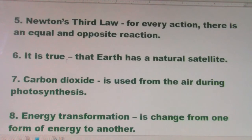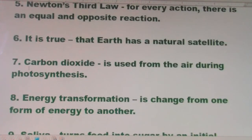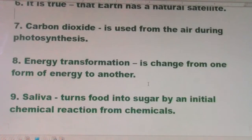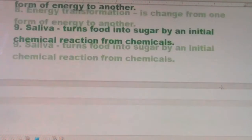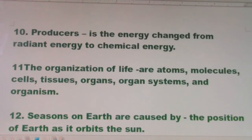Number six: it is true that the Earth has a natural satellite. Number seven: carbon dioxide is used from the air during photosynthesis. Number eight: energy transformation is when energy is changed from one form to another.